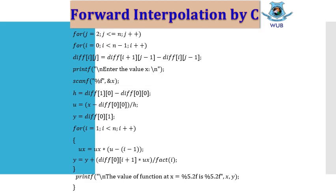For creating the difference table, you have to write two loops, because this is a two-dimensional array, so we need two for loops for creating the difference table. Then you have to calculate the difference h. For counting u, we take the value of x and calculate it easily. The difference — that means h and u — are computed, and then we put all the values into Newton's forward interpolation equation, and finally we can get our desired result.